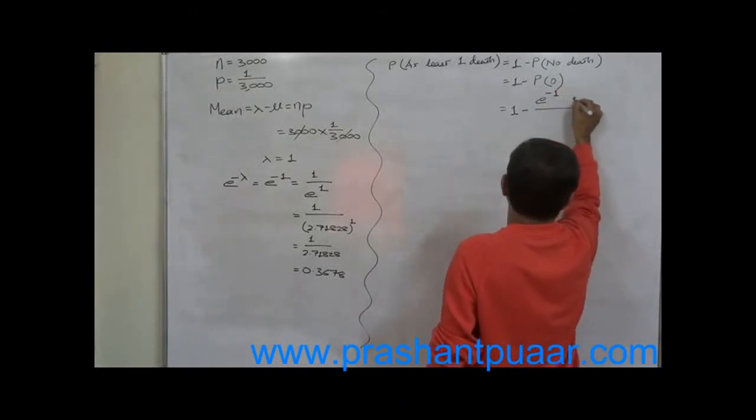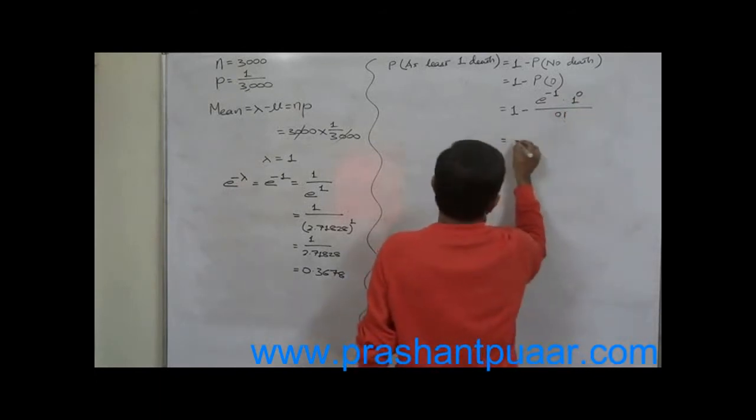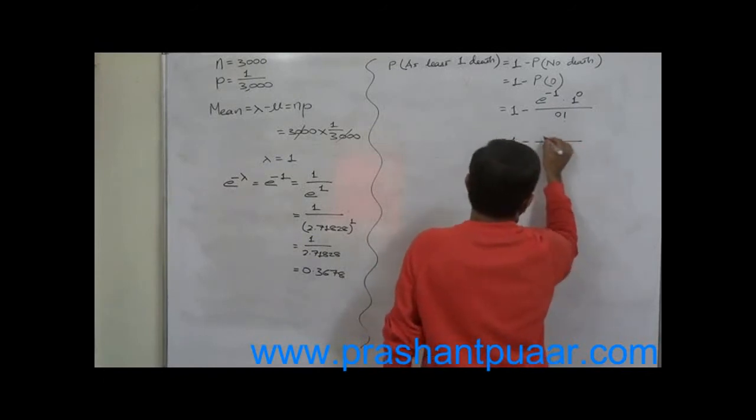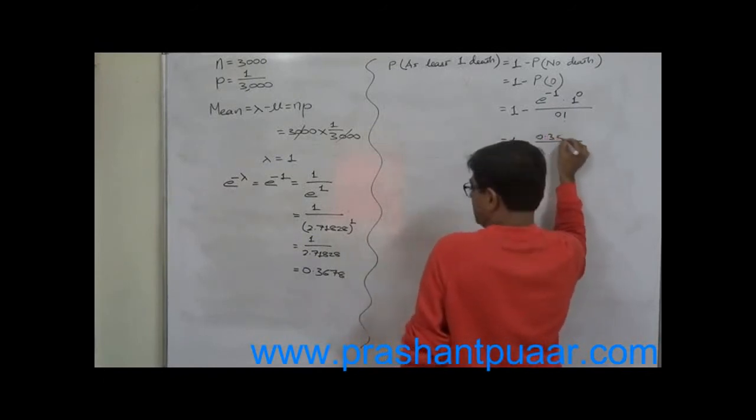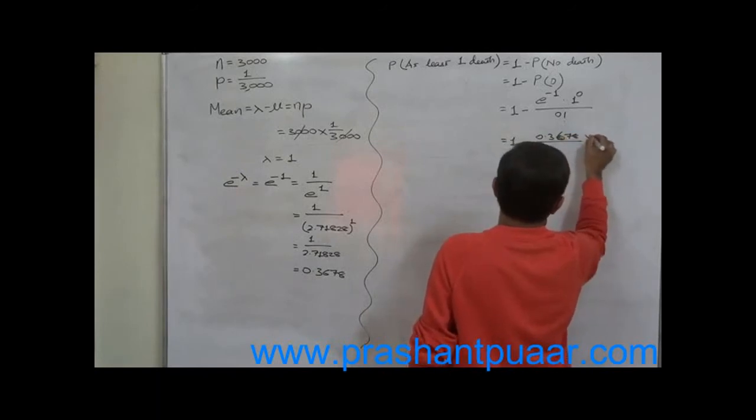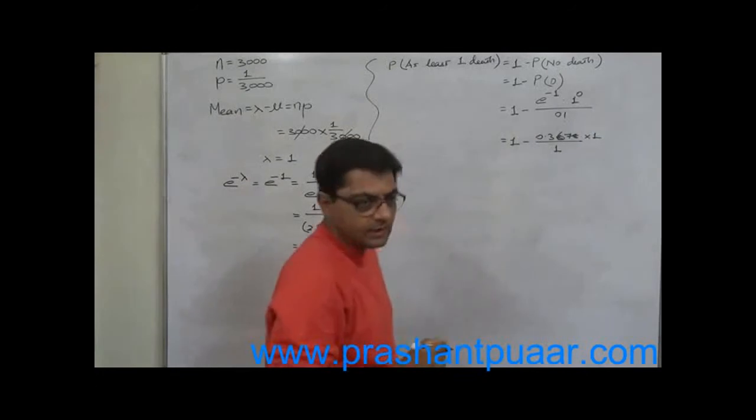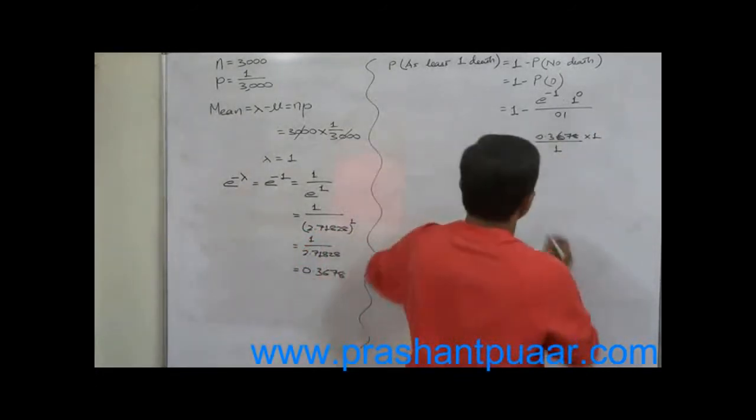That means 1 minus e raise to minus 1 into 1 raise to 0 upon 0 factorial. So it is 1 minus 0.3678 into 1 upon 1, because anything raised to 0 is 1 as well as 0 factorial is also 1.